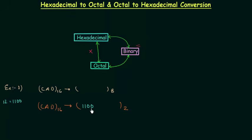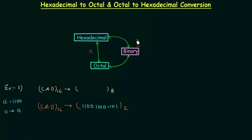A is 10, and 10 is represented by 1010. The next digit is D, which is 13, and 13 is represented by 1101. So the binary equivalent of CAD is 110010101101. We have done 50% of the job — now we have to convert this binary number to octal.